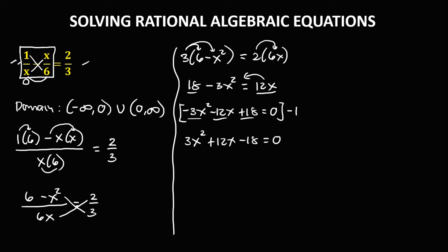Observing the numerical coefficients — 3, 12, and 18 — all are divisible by 3. Dividing through by 3: 3÷3 = 1, so 1x squared; 12÷3 = 4, so plus 4x; 18÷3 = 6, so minus 6, equals 0.